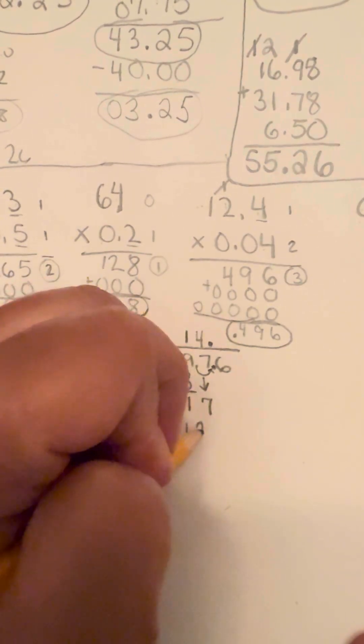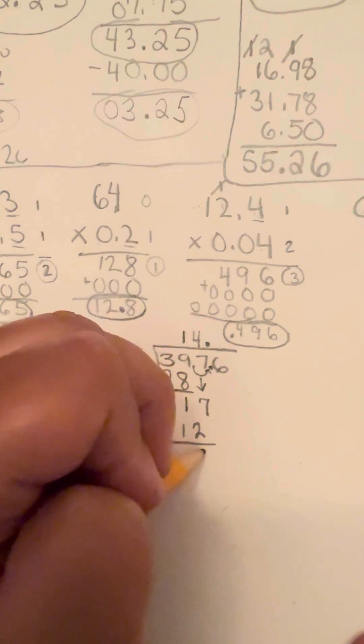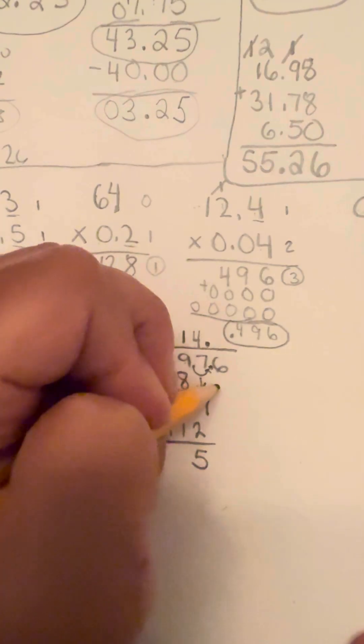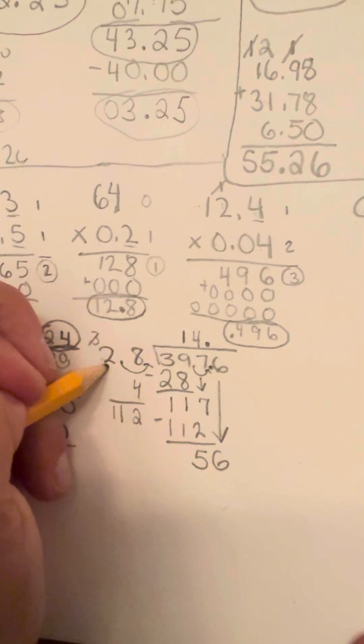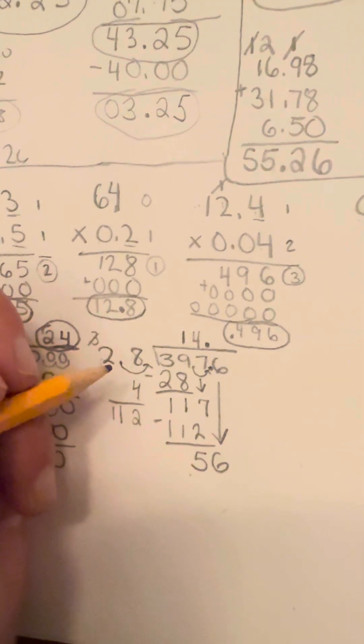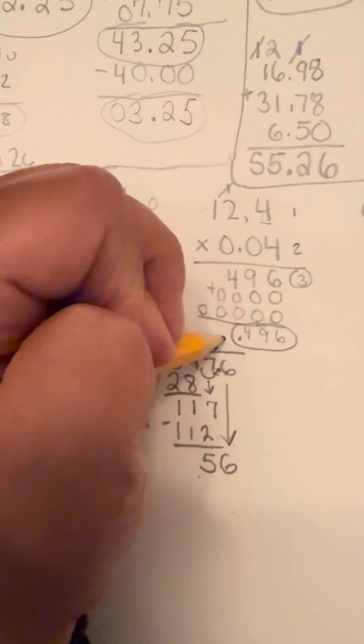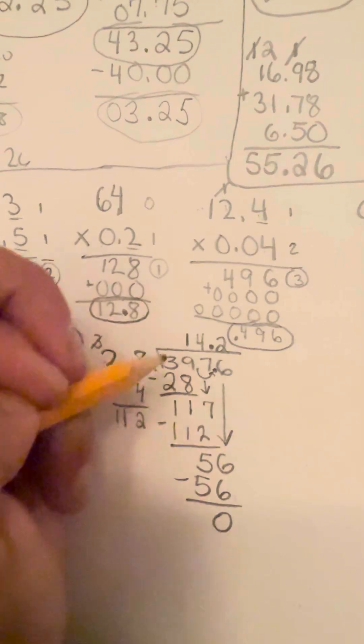And then you're left with 112. So I'm going to subtract 112 from 17. That leaves me with 5. I'm going to bring down this 6 right here. And then I want to see 28 can go into 56 nicely. It goes in twice and nice and even. And so that's going to be 56 with a zero remainder.